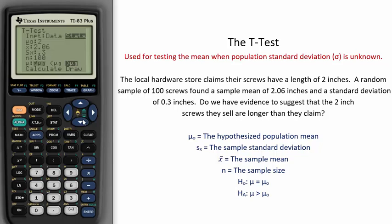In this problem, we want to see if there is evidence to suggest that the 2-inch screws are longer than they claim, so we will test to see if the true mean is greater than the hypothesized mean of 2. We entered in 2 previously, so is there evidence to suggest the true mean is greater than 2?